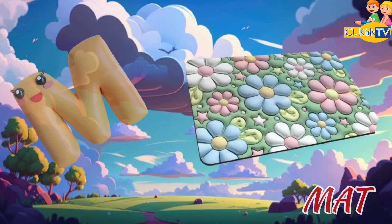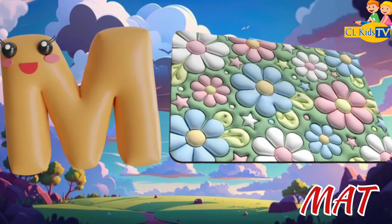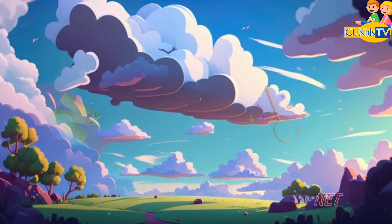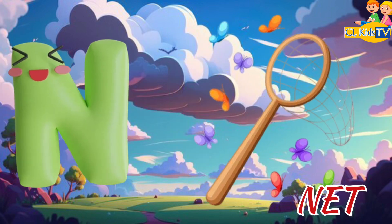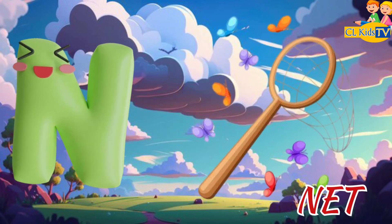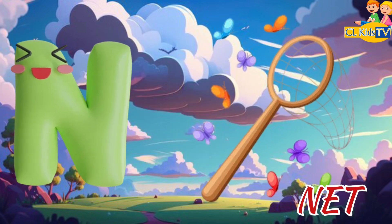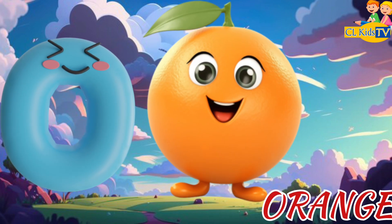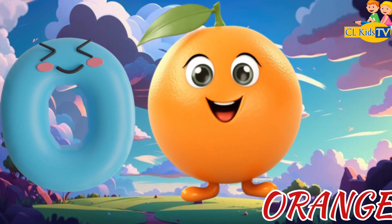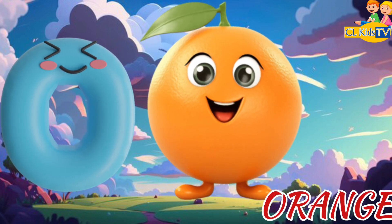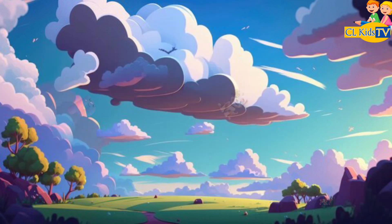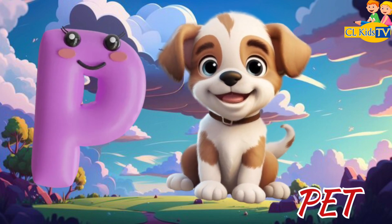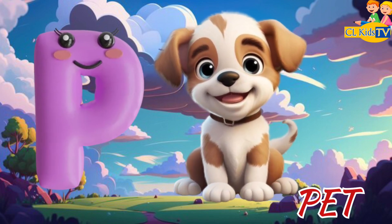M is for Mat, M-M-Mat. N is for Net, N-N-Net. O is for Orange, O-O-Orange. P is for Pet, P-P-Pet.